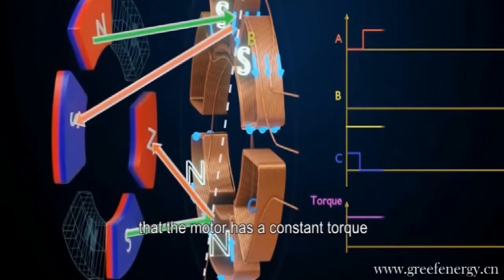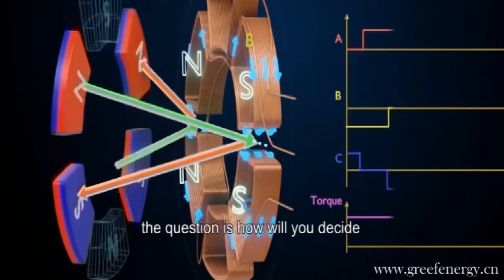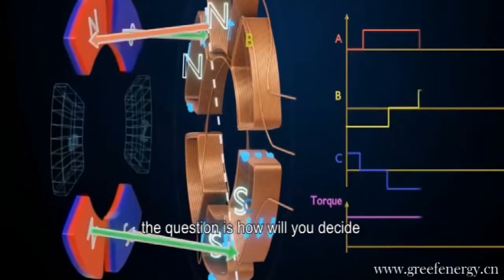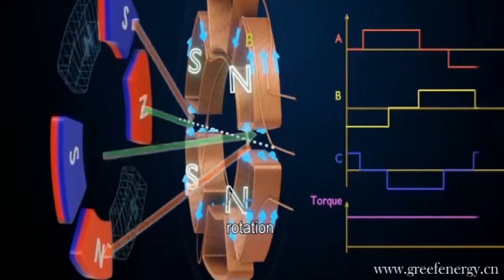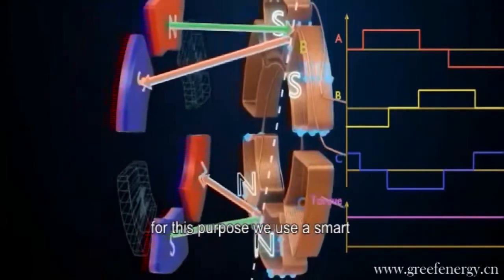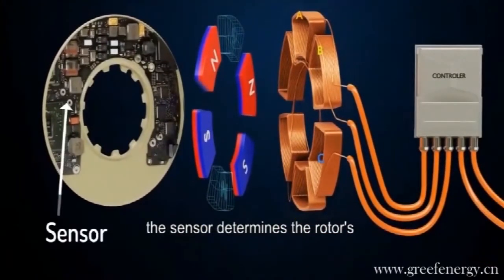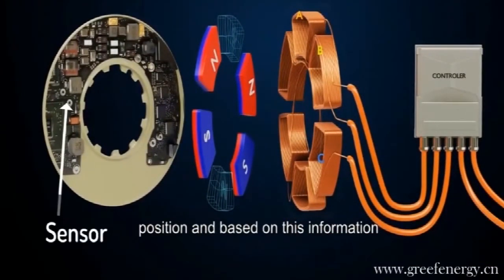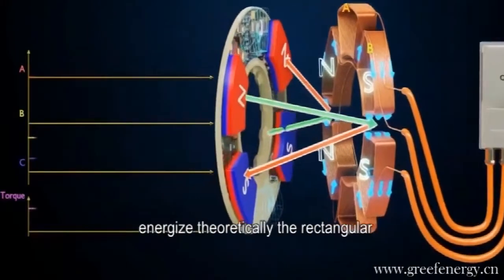Interestingly, this process also ensures that the motor has a constant torque output. The question is, how will you decide which coil to energize to get continuous rotation? For this purpose, we use a smart electronics controller. The sensor determines the rotor's position, and based on this information, the controller decides which coil to energize.